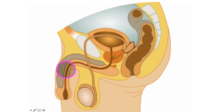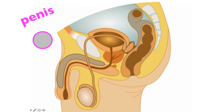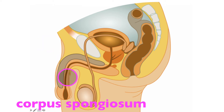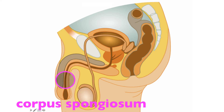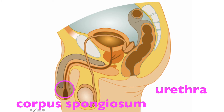First off, we have the penis, which is composed of three cylindrical erectile tissues. In light orange here, we have the corpus spongiosum — there is a singular corpus spongiosum. Running right down the middle of that is the urethra, specifically the penile urethra.